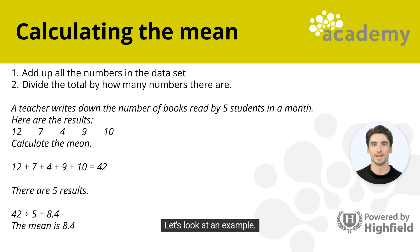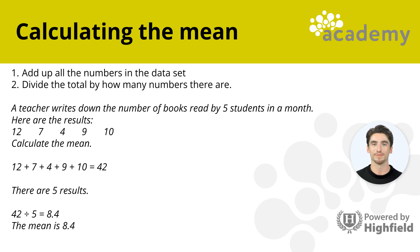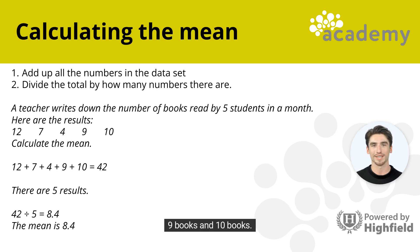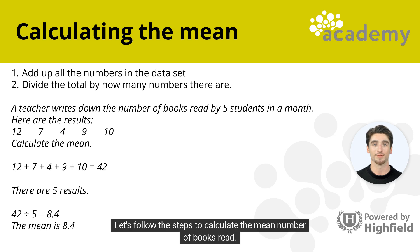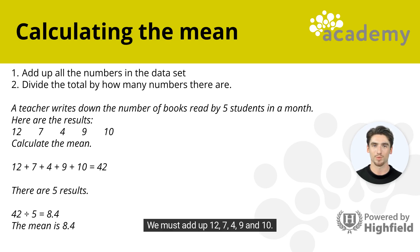Let's look at an example. A teacher writes down the number of books read by five students in a month. The results are: 12 books, 7 books, 4 books, 9 books and 10 books. Let's follow the steps to calculate the mean. Step 1: add up all the numbers — 12, 7, 4, 9 and 10. This totals 42.